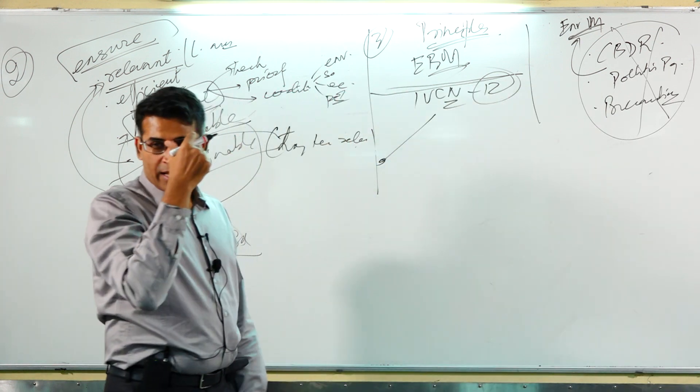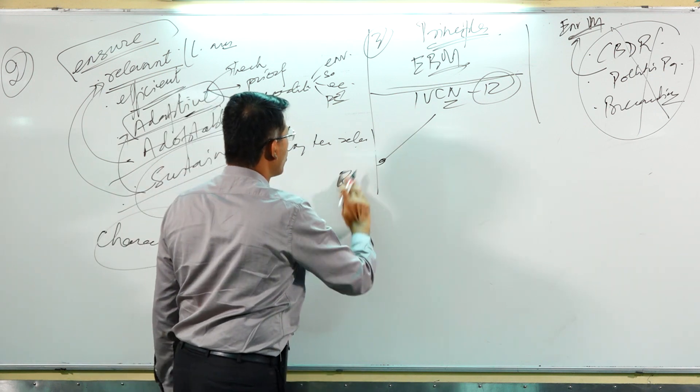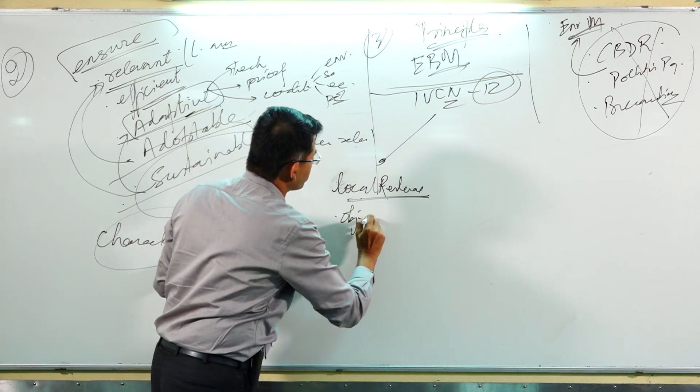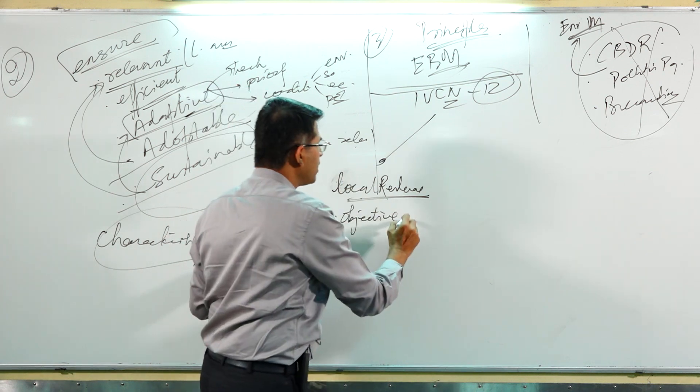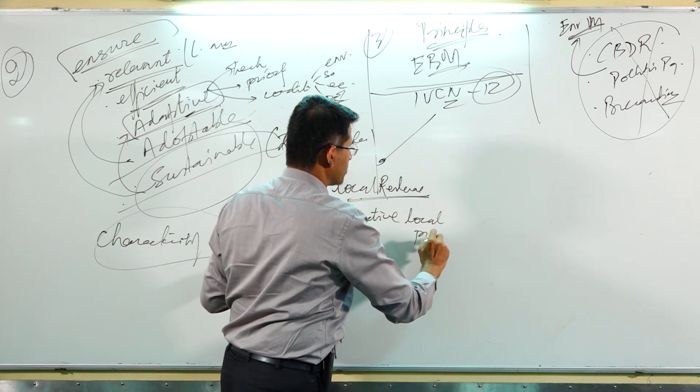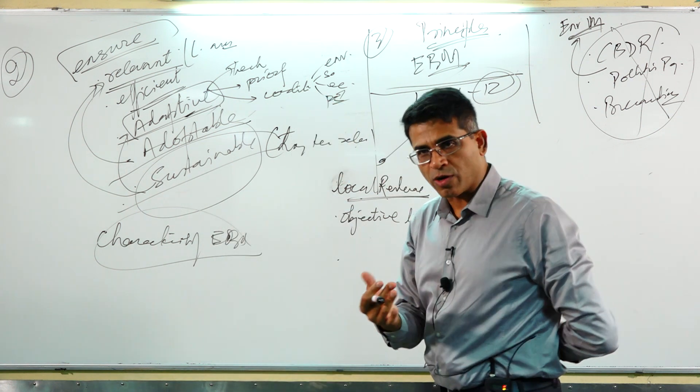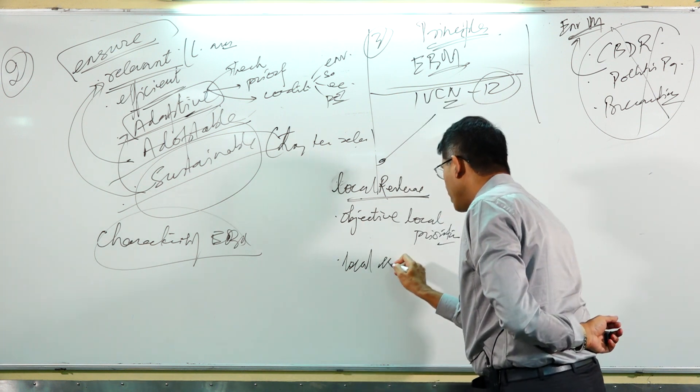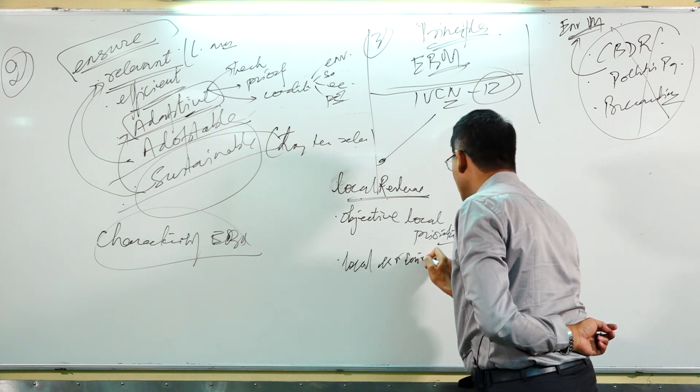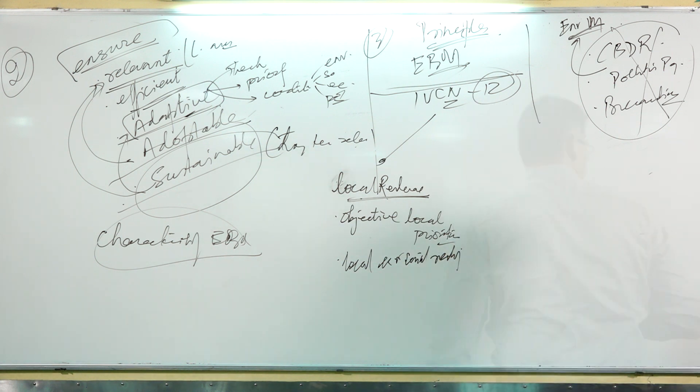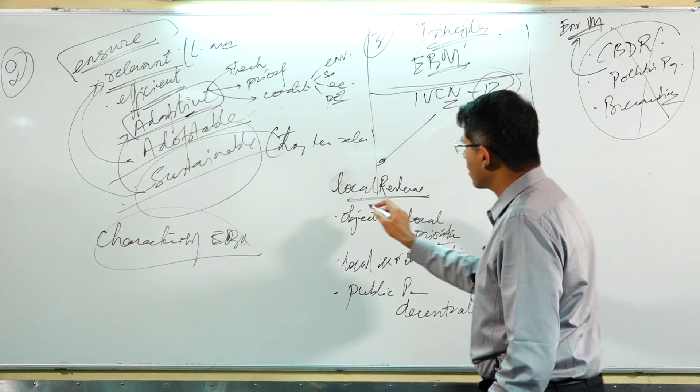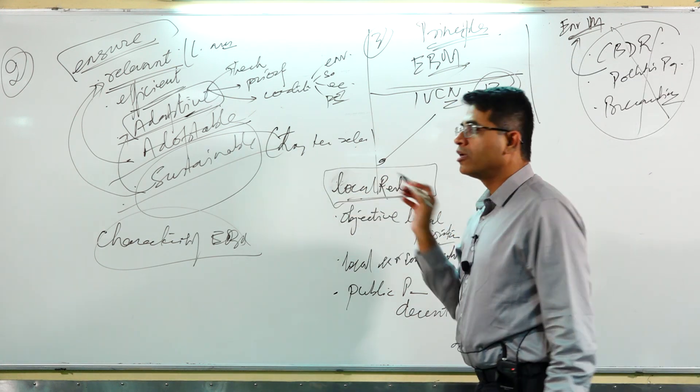One is around local relevance where we say that the objectives have to be driven by local priorities. It must be based on local economic and social reality. We must ensure public participation through decentralization. I have put them all under one head called as local relevance.